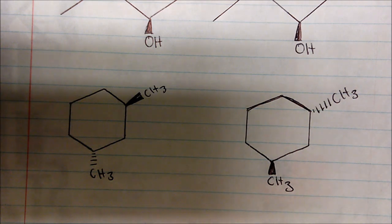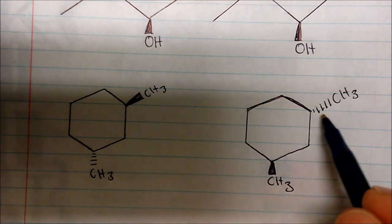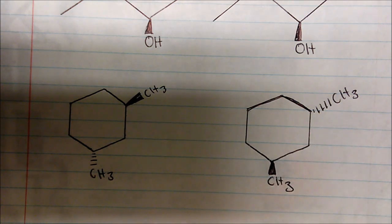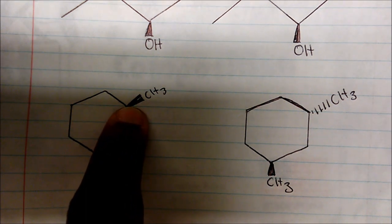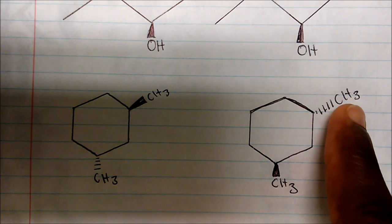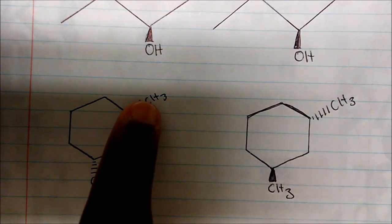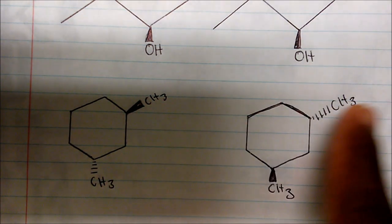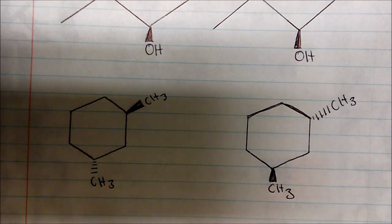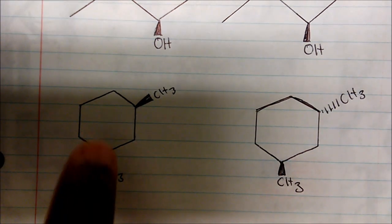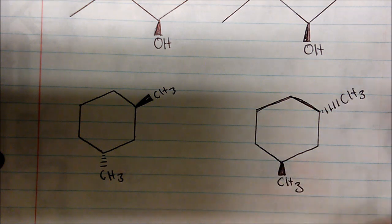Now what about this one? How many chiral centers do I see? I see two — one here and one here. Now if I take a look at this, I see that I have a CH3 that's going out of the board and one that's going away. So if I look at the same carbon — call this carbon one — one is going out, one is going down, one is coming up.